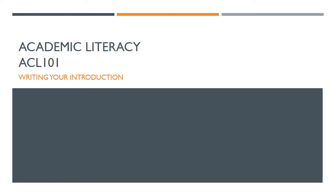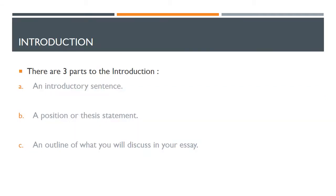This academic literacy video takes you through writing your introduction. There are three parts to an introduction in an academic essay. These three parts are: firstly, an introductory sentence; secondly, a position or thesis statement; and thirdly, an outline of what you're planning to discuss in your essay. We will discuss each of these briefly.